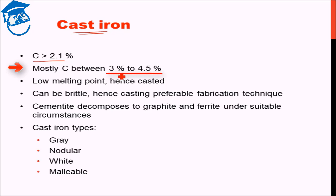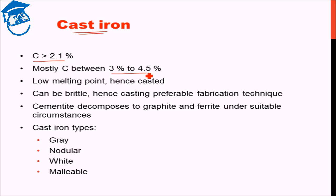We do not go to very low carbon nor do we go to very high carbon like 5 or 6 percent. This is the range normally used. Now cast iron has a low melting point compared to other iron and steel, hence they are casted.